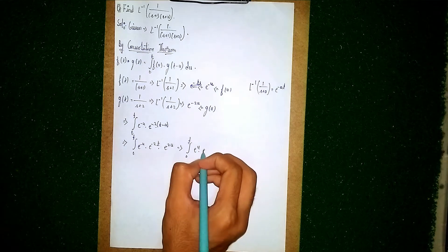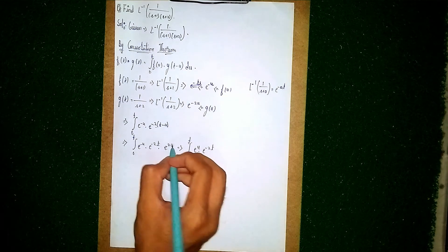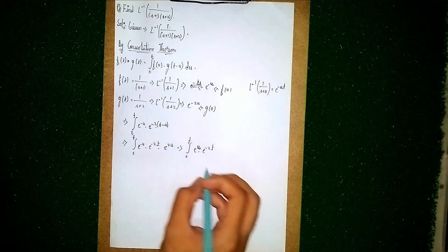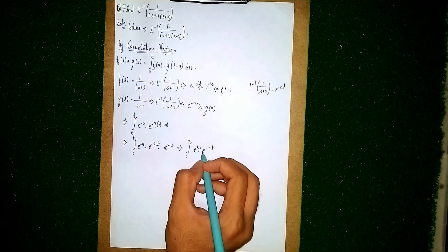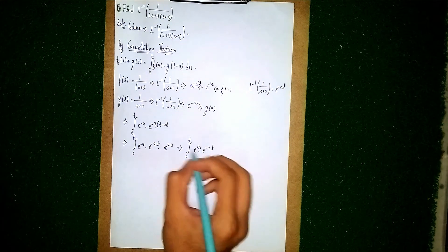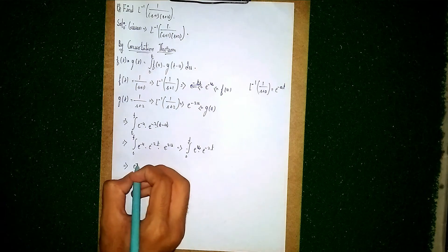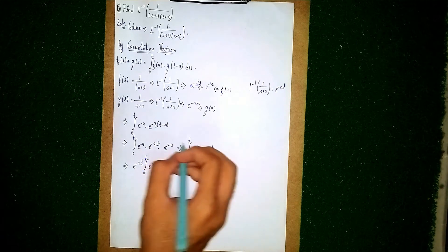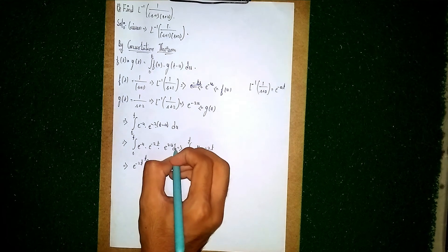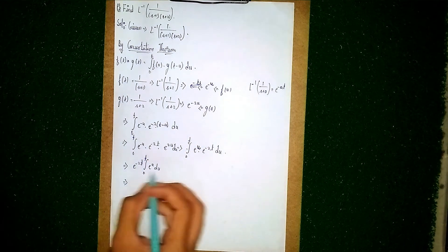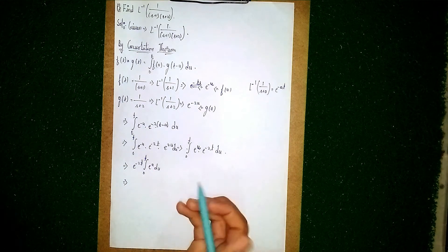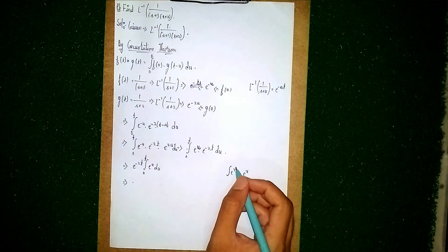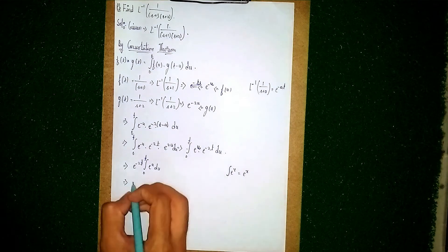The exponent simplifies to e to the power u — not 4u, don't get confused. Since e to the power minus 2t is a constant with respect to u, take it outside the integral: e to the power minus 2t times the integral from 0 to t of e to the power u du. The integral of e to the power x is e to the power x, so this becomes e to the power minus 2t times e to the power u, evaluated from 0 to t.